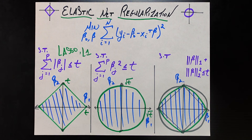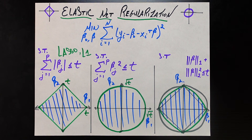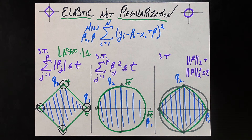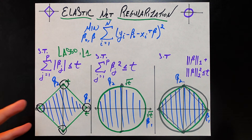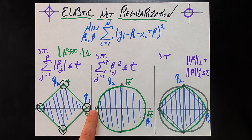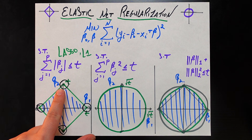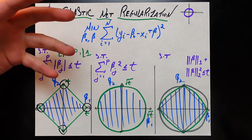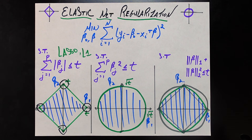The diamond shape is crucial for one of the most important properties of lasso: the sparsity property. When using lasso regression with this diamond-shaped constraint, the solution is very likely to land exactly at one of the corners. What is special about those corners is that one — and in the many-dimensional case, many — of the betas will be exactly zero. For example, at one corner beta-1 equals t and beta-2 equals zero, and at another corner beta-1 equals zero and beta-2 equals t.